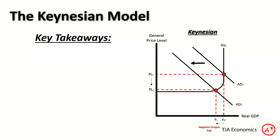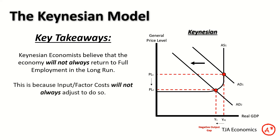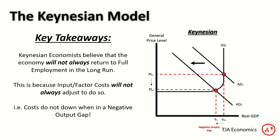Key takeaway for Keynesians: Keynesian economists believe that the economy will not always return to full employment in the long run. This is because input and factor costs do not always adjust — costs don't go down due to negative output gaps. That's the key difference: Keynesians don't believe input costs fall in a recession, whereas classical economists do.